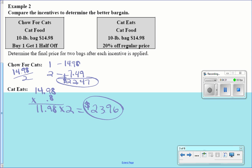So if you want to spend the least amount of money on a 10-pound bag of cat food, which is the better bargain? Chow For Cats. Better bargain. $22.47 is less than $23.96. Not bad, right?